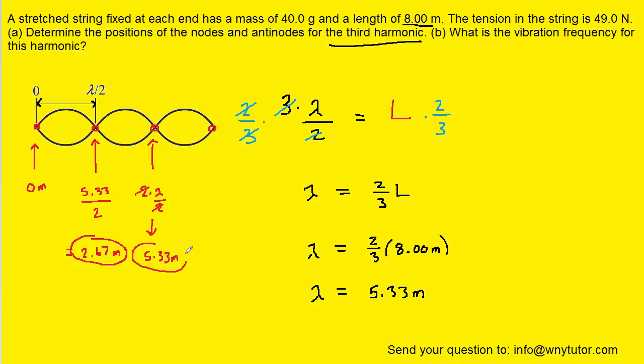And then the final node is one two three half wavelengths, so that would be three times wavelength divided by two. And when you plug in 5.33 for the wavelength you get eight meters, or the full length of the string. And then the first node was at zero meters, so that would be the position of the first four nodes.